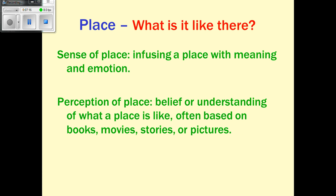Place — you should ask, what is it like there? What are the physical as well as cultural, human-made features of a place? If you went there, what would you see? Trees, rivers, mountains — physical features — but also roads, schools, malls, types of food, languages spoken, clothing worn. All of that is place. We also have the sense of place, where we infuse a place with our memories and associations, giving us an emotional connection. A perception can be based not on memories specifically, but on what we've heard or read about a place.